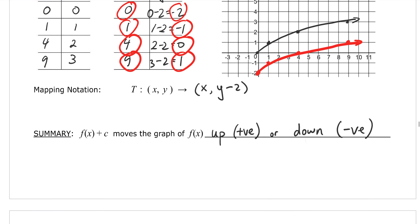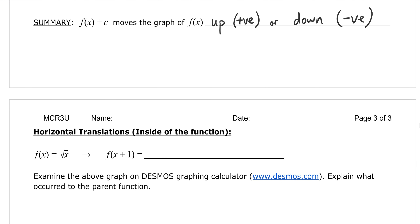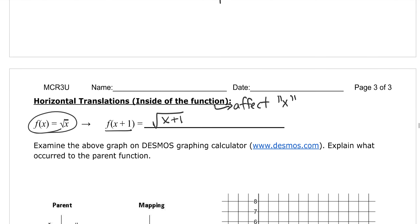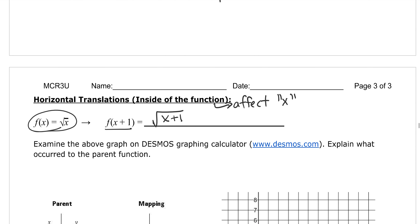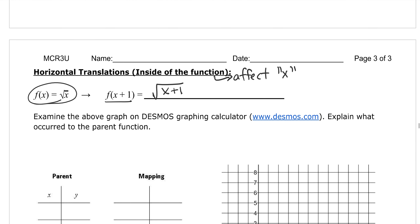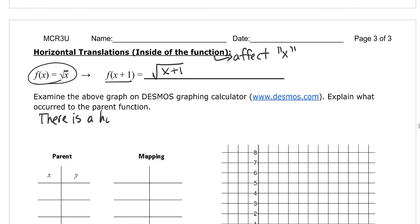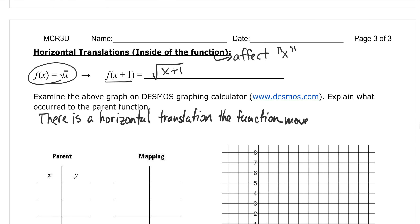Now let's look at horizontal translations, which deal with the inside of the function. When you change the input, that's going to affect the x value. So f(x) = √x, and f(x+1) means you're changing the input — it becomes the square root of (x+1). From the Desmos activity, you would have seen there is a horizontal translation — the function moves left.